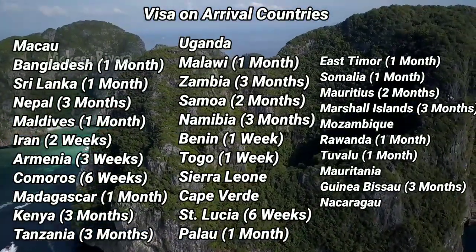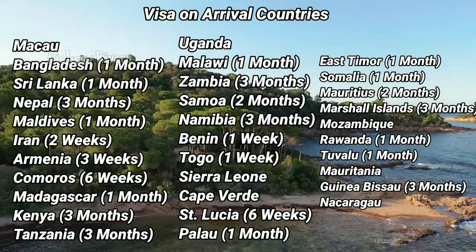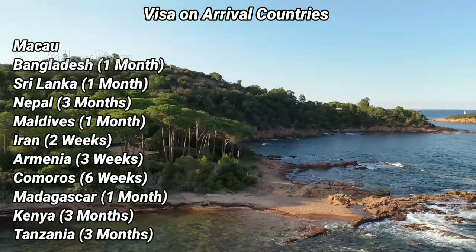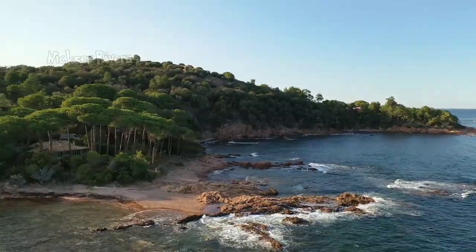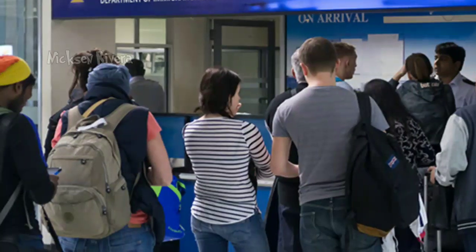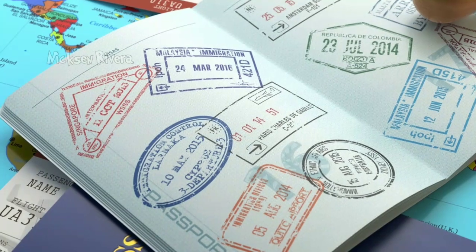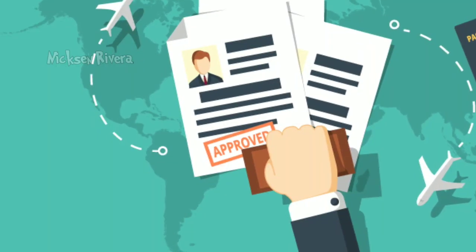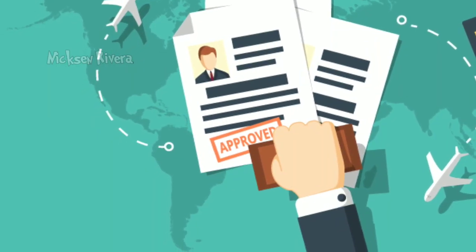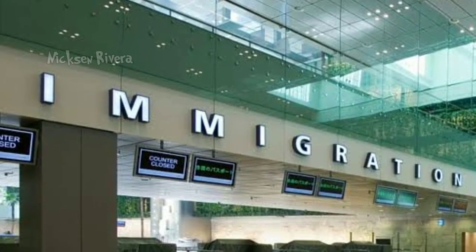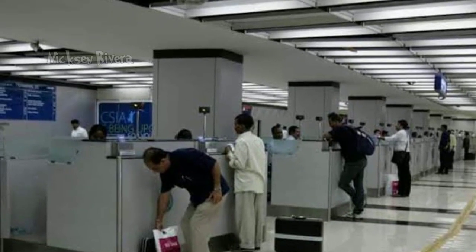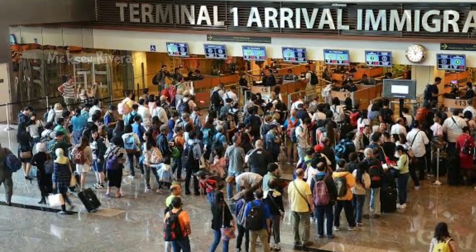Those were the 32 visa on arrival countries for Cambodian passport holders. When you land at your destination, make sure you have your return ticket and hotel bookings ready. Look for the visa on arrival counters at the airport, fill out the visa on arrival form, answer a few questions, and they will stamp the visa in your passport.